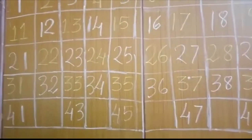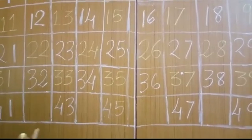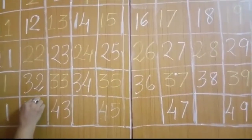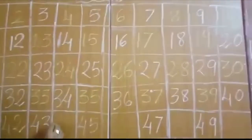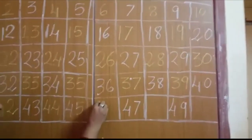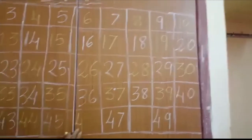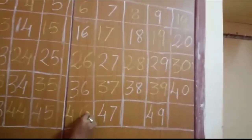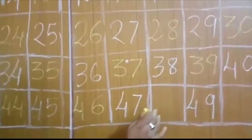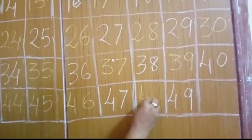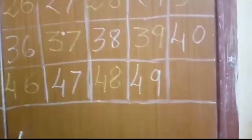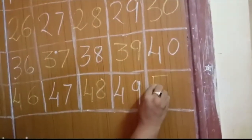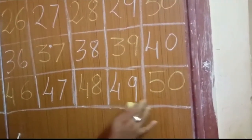So now after 40, what number will come? 41. And after 41, what number will come? 42. Then 43. And what number will come after 43? 44. 45. Then what number will come after 45? Think, my students. 46. 47. Then 47, what number? 48. 49. Then what number will come after 49? Yes, exactly — 50. So 49, 50.